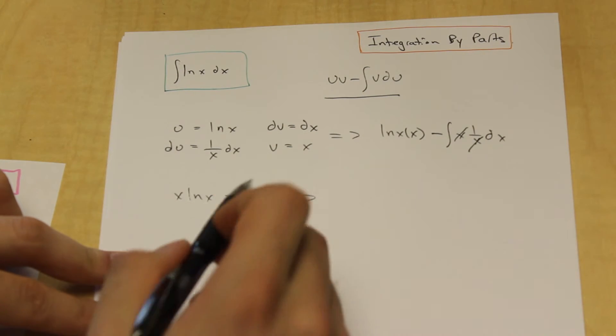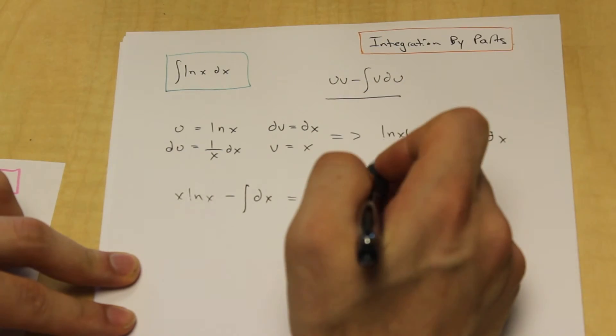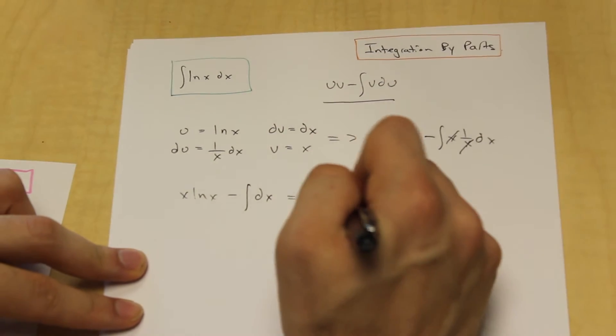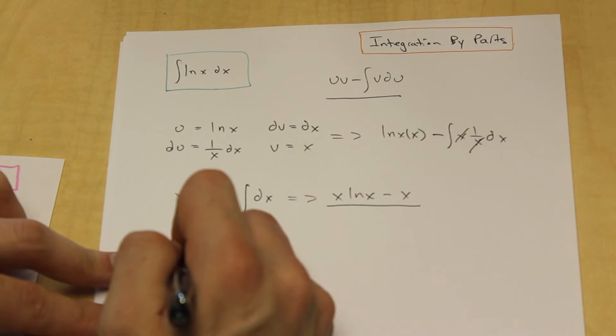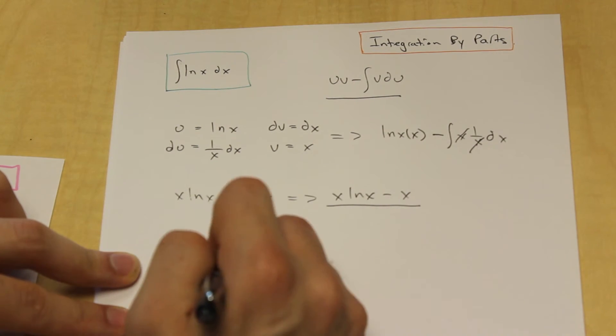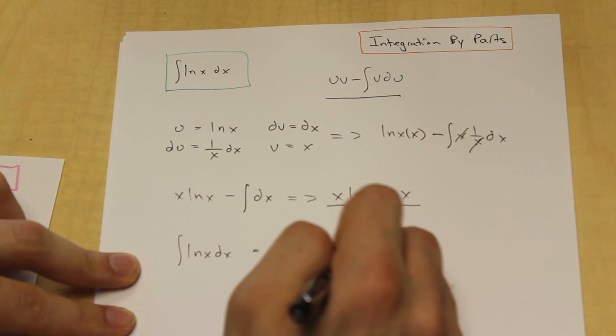This is done. We don't have anything to do with that anymore. And the integration of dx, as we know, is just simply x. And there we have it. So the integration of ln x dx is x ln x minus x.